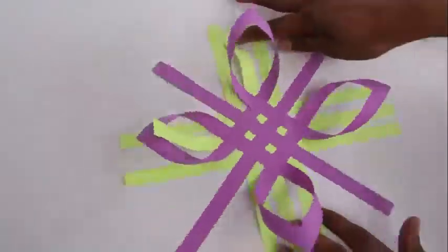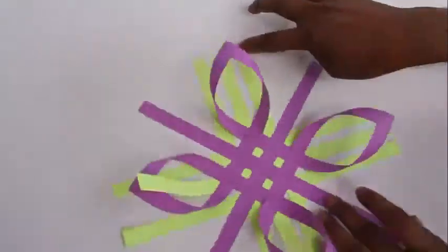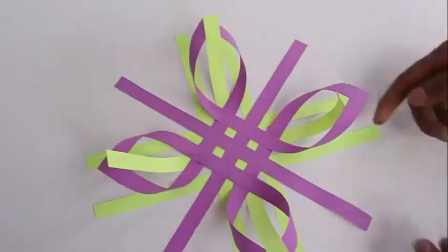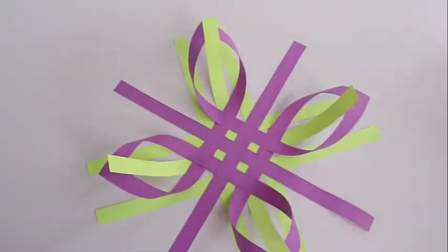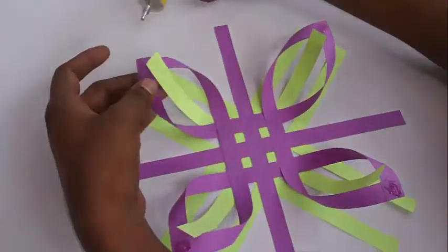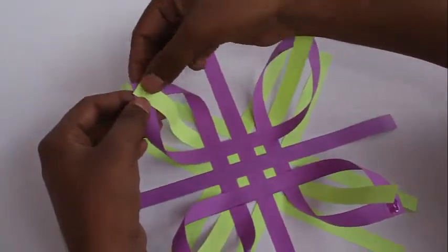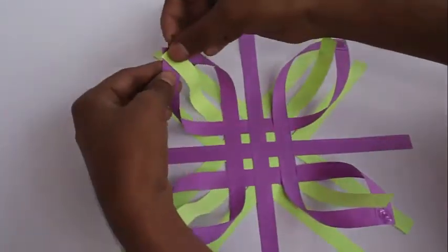Then take the middle of the green strips and place them on top of these petals. Apply little dabs of glue on the tips of the magenta petals and stick the green strips to them.